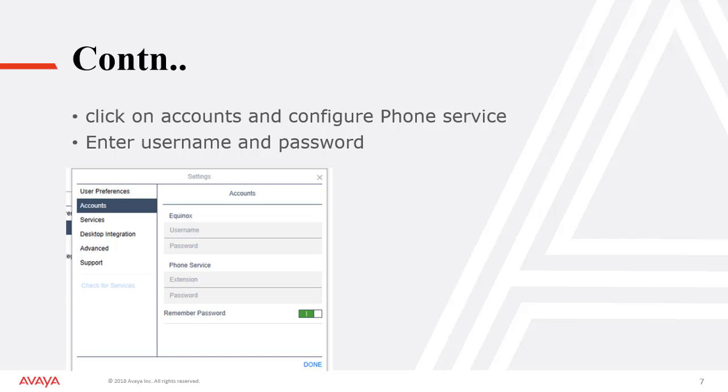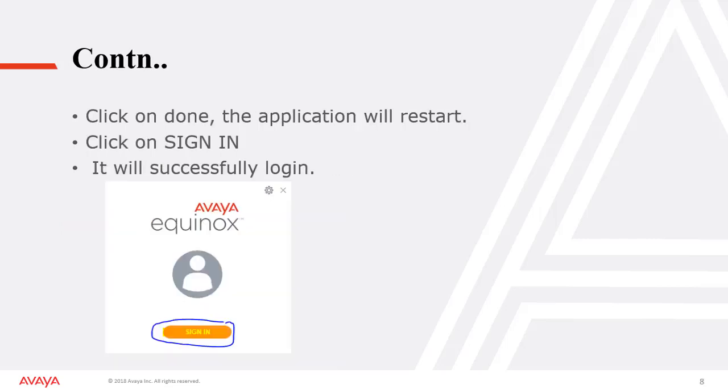Once this is done, go to the Accounts tab and configure the phone server username and password. After this is done, click on Done and this will prompt for application restart. Once the application is back again, sign in and you will be successfully logged in to the client. If there is any conflict with the certificate, then it will give you a login failed error.